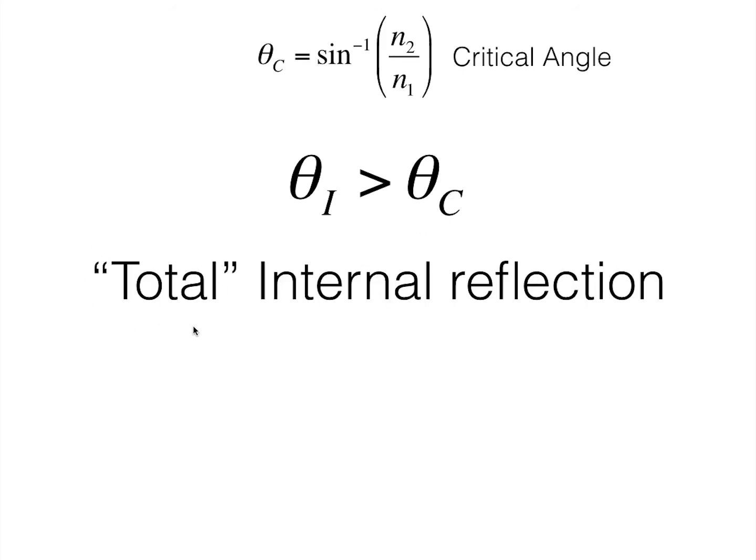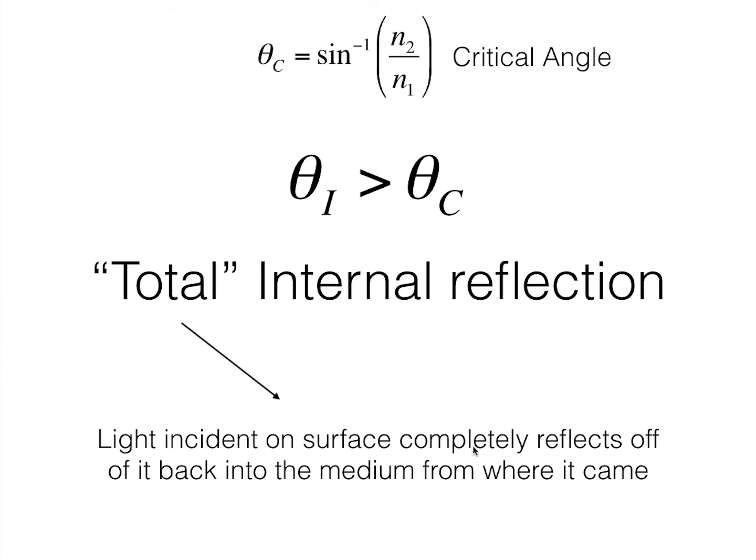And this total internal reflection is called a total internal reflection because when light is incident on the surface, it completely reflects off of it back into the medium from where it came. But does it actually completely reflect off? We'll look into that.